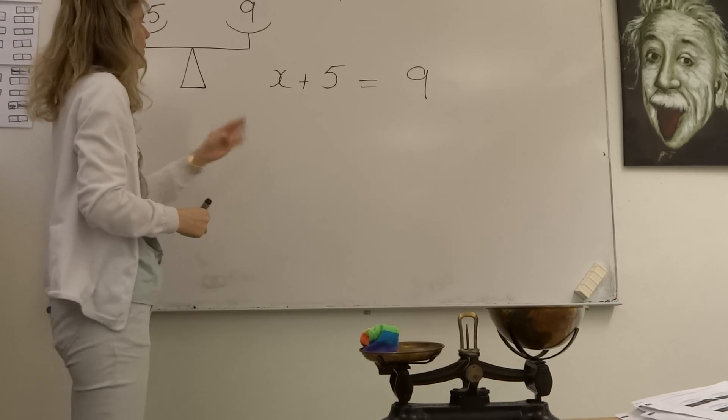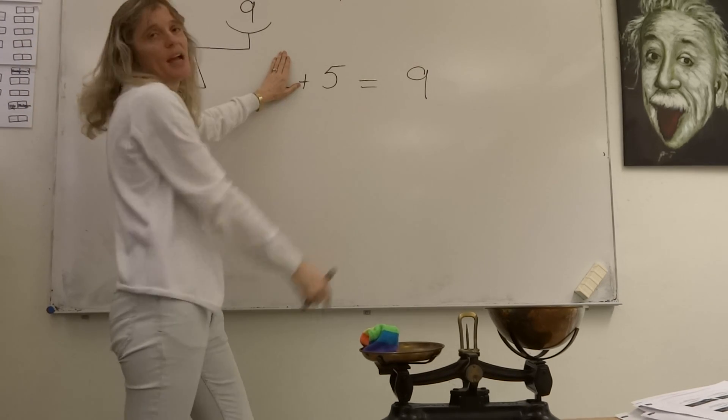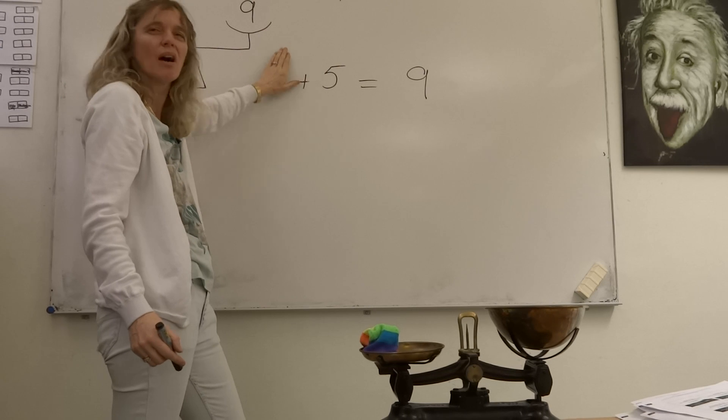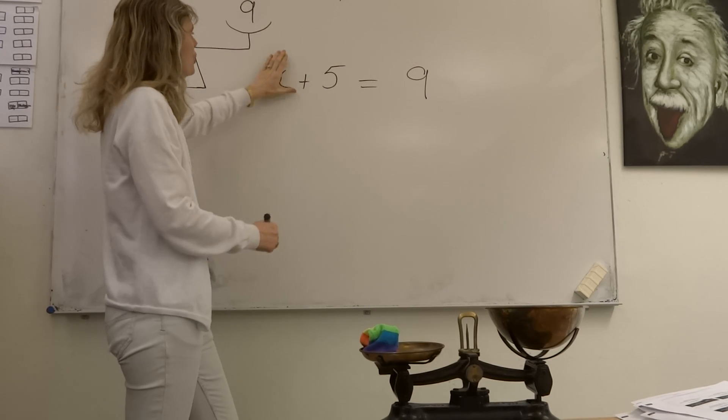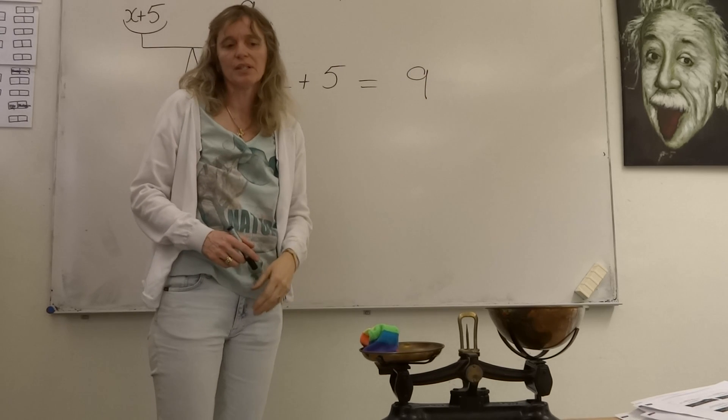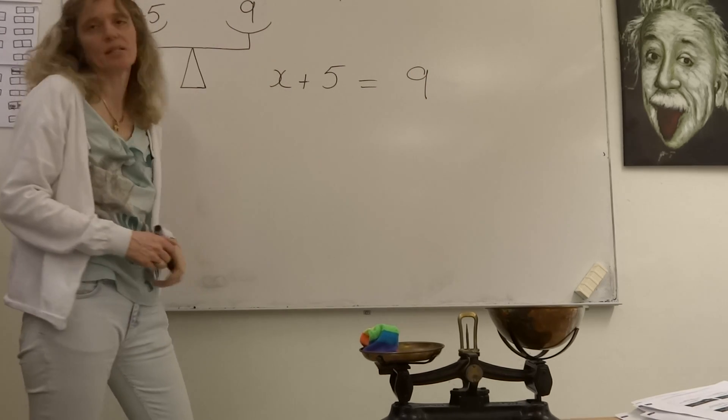Now, most of you understand that, that something plus 5 equals 9. When you use the cover your hand rule, you find it quite easy. Because you know that 4 plus 5 must equal 9. So, therefore, x must equal 4.